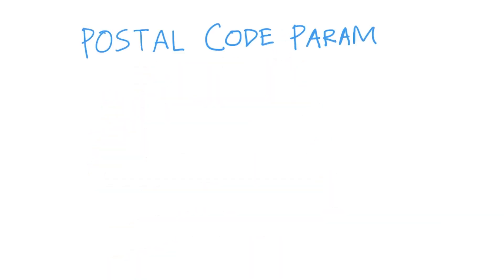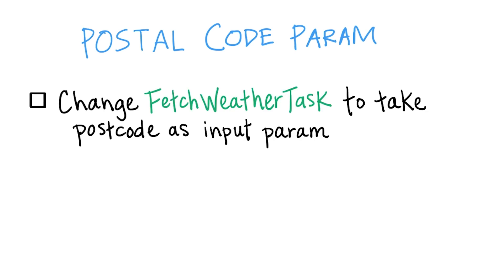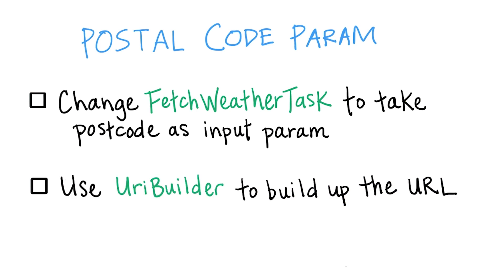So let's make the fetch weather task more flexible by having it take as input a postal code parameter. While we're doing that, we should also take this opportunity to do a little bit of refactoring — instead of concatenating the strings for the server query URL, we should use a UriBuilder class to build up the URL.